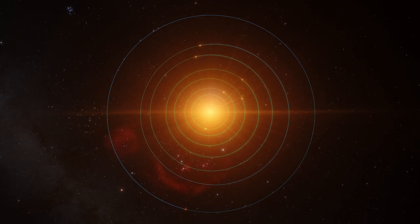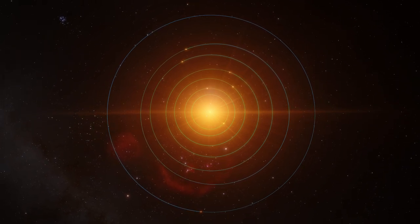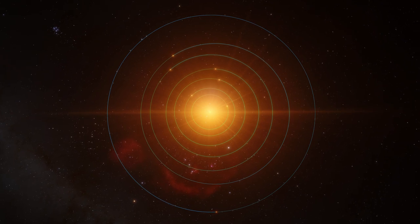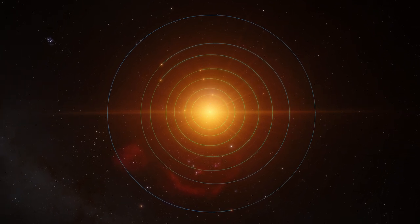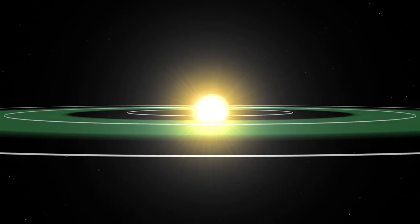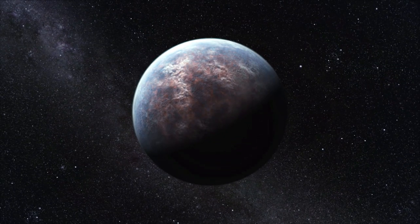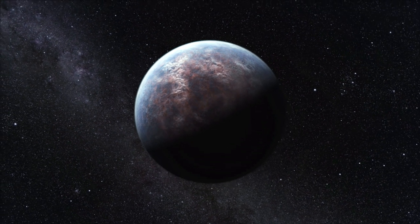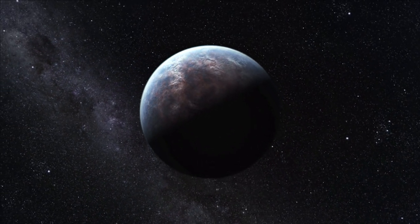However, this method has limits. Transits only happen if a planet's orbit actually crosses between its host star and Earth. So its orbit must be edge-on towards us. This is the case for just a small fraction of planetary systems.